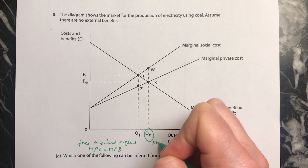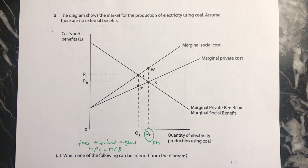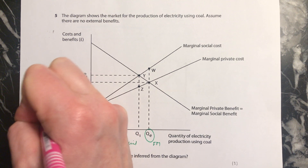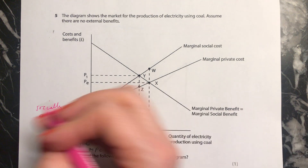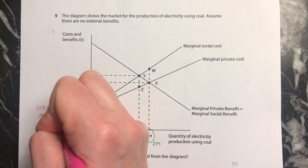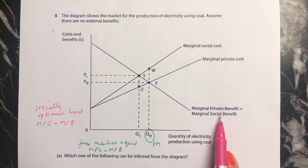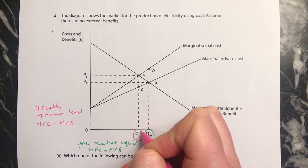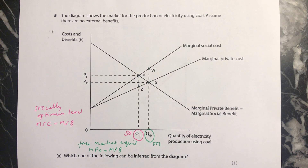We can also find out where the socially optimum level of output is. The socially optimum level of output occurs where marginal social cost equals marginal social benefit. Social cost and social benefit come together here — it's this quantity. So this is the socially optimum level of output at Q1.